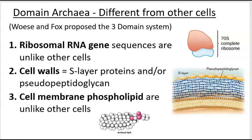Domain Archaea is a separate domain because Woese and Fox proposed in the 1970s that there are two different groups of prokaryotic cells, separate from eukaryotic cells. When we look at the differences from other prokaryotes, the key feature is the ribosomal RNA gene sequences — the sequences making up the ribosome structure in domain Archaea are different from both bacteria and eukaryotic cells.